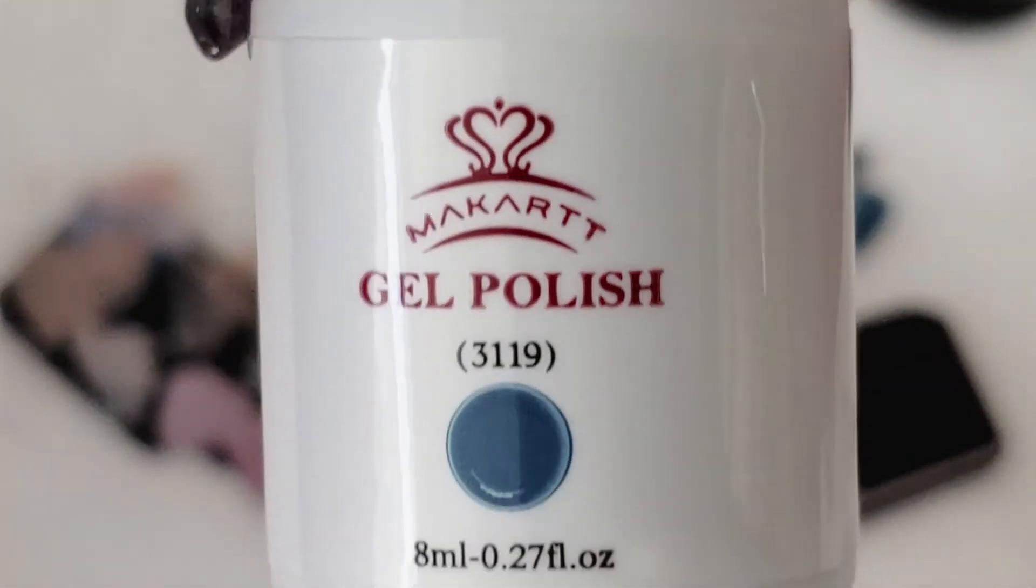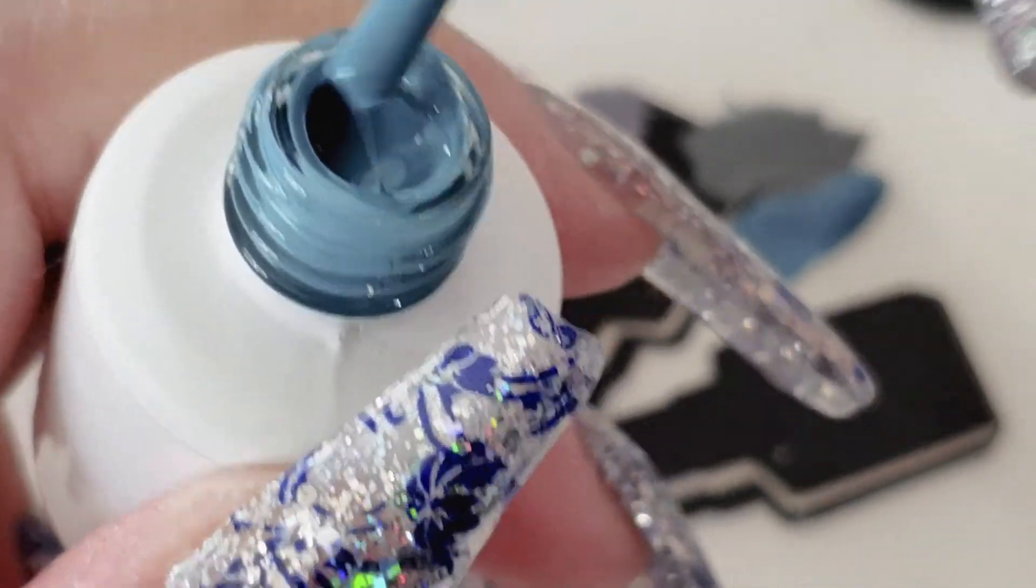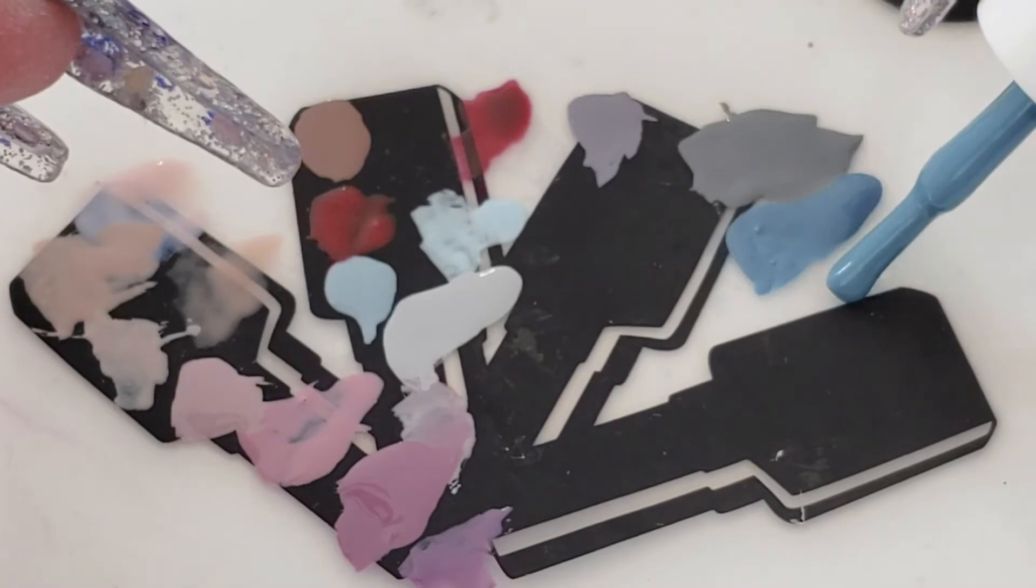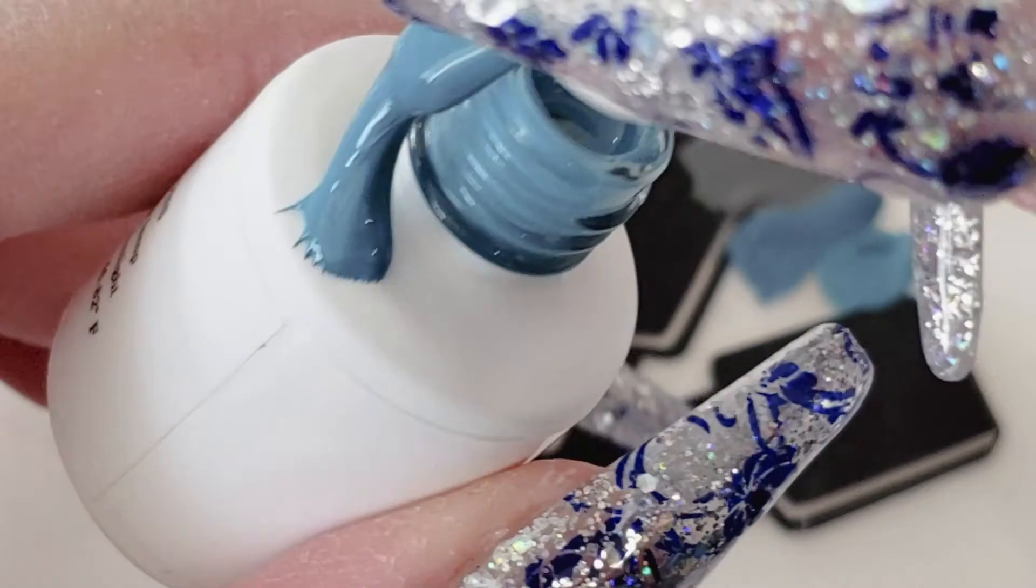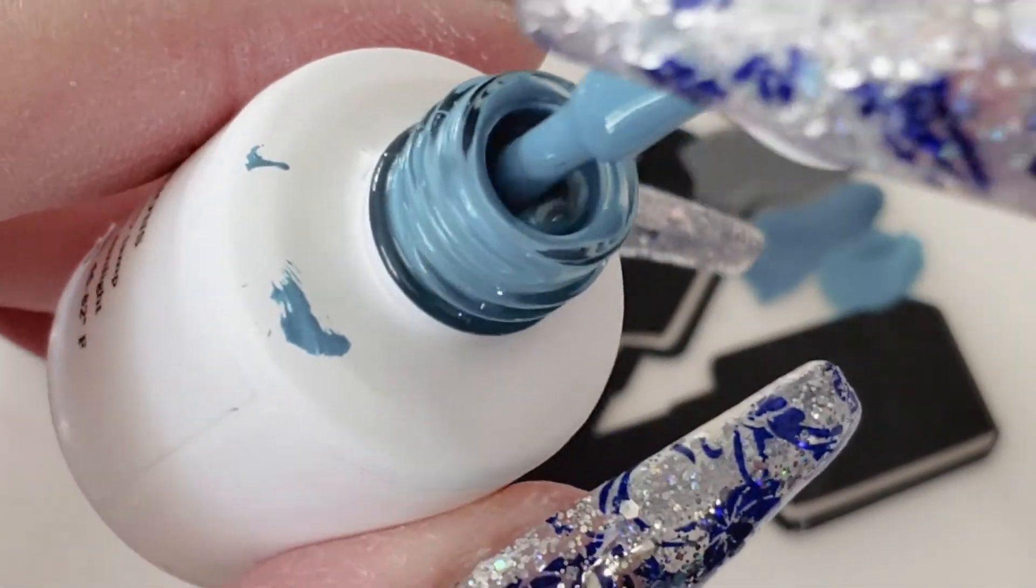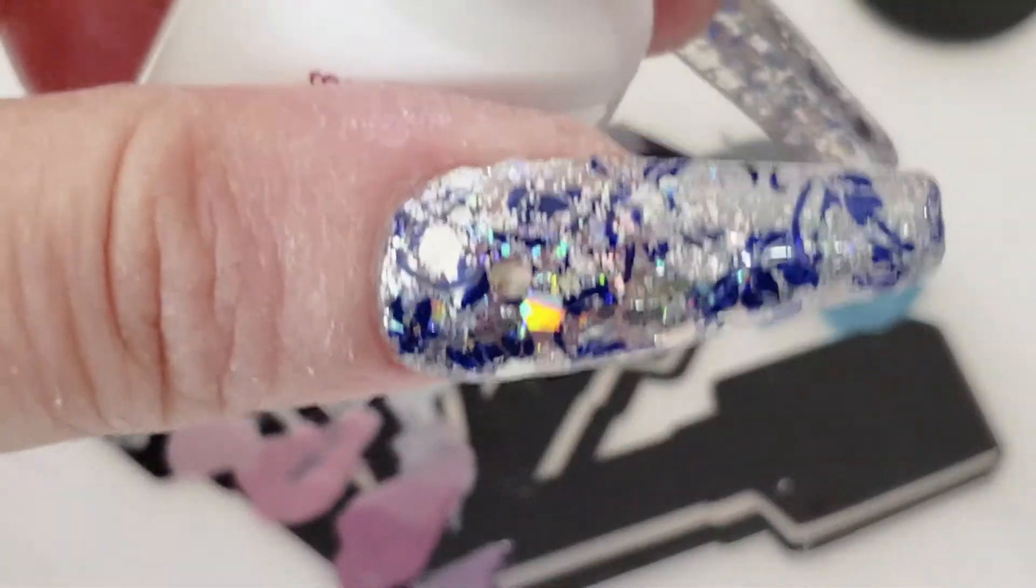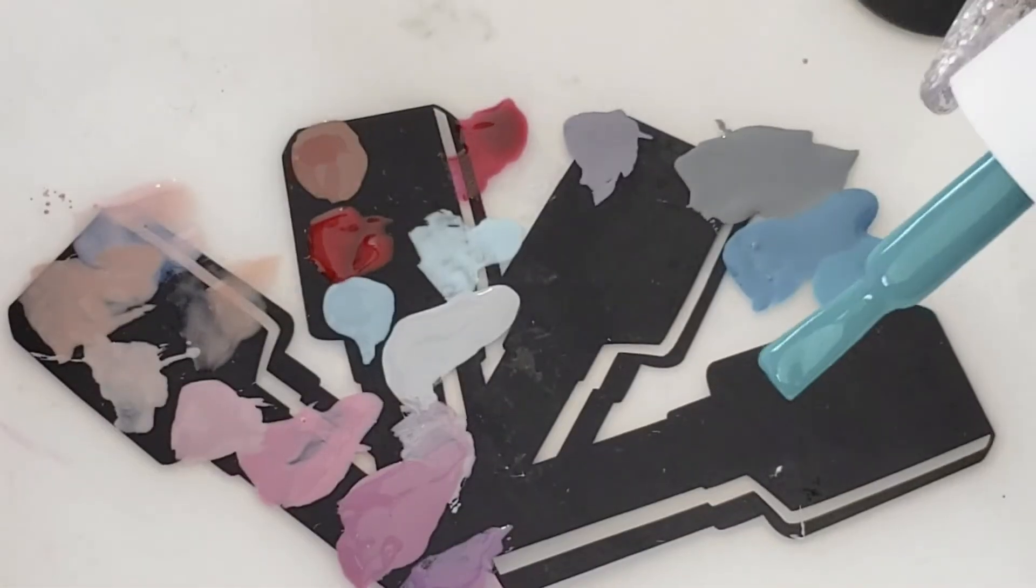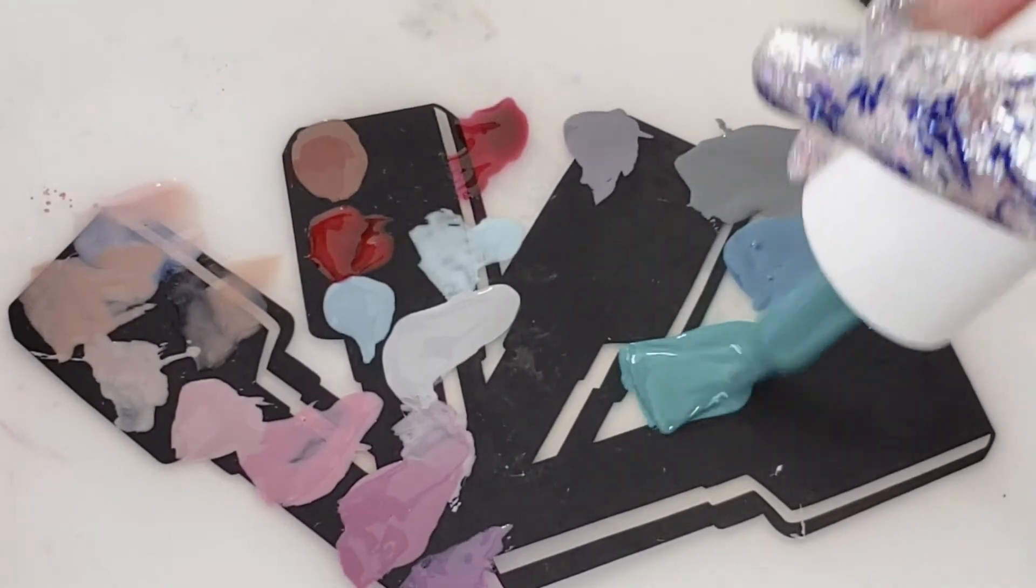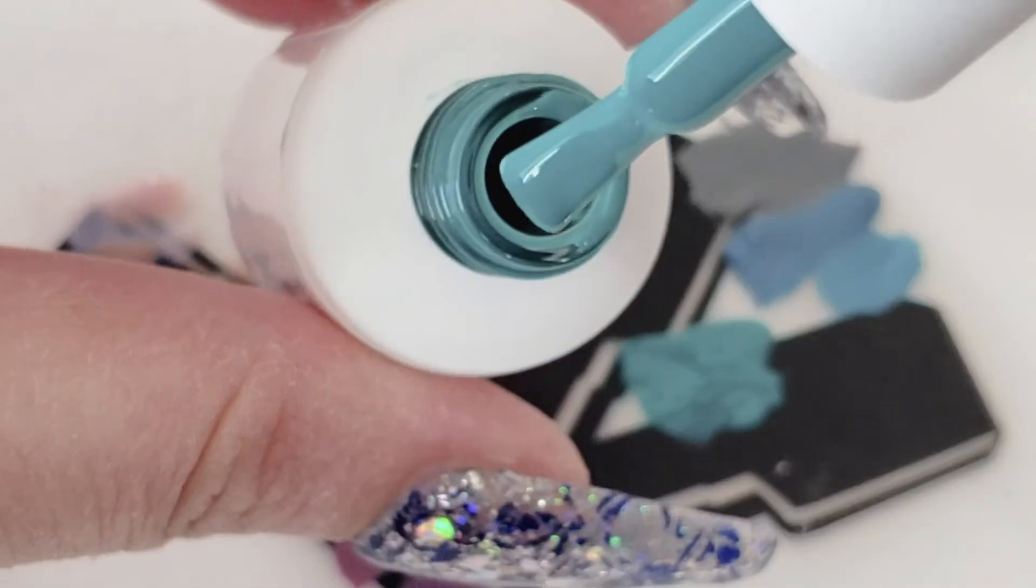Next is 3119, another bluey heel. Put that right next to each other there. Oops, dang it, they always do that. Okay. 3120, and this looks like a really dark color. Put this right here. Looks like another dark blue.